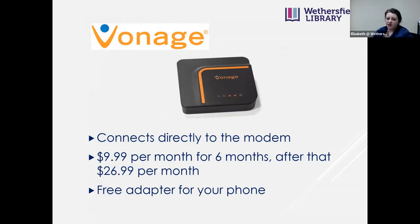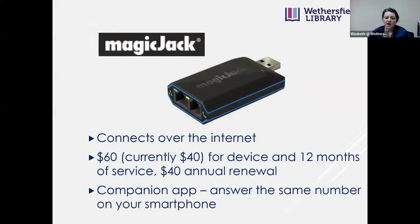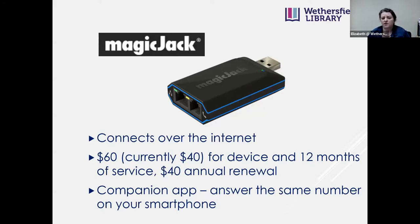Vonage connects directly to the modem rather than over Wi-Fi, with a free adapter included. It's $9.99 for the first six months, then $26.99 per month. MagicJack — seen in infomercials — is similar: $40 for the device with 12 months of service, then $40 annual renewal. It can connect to a laptop, a computer with internet, or directly to a modem. It also has a companion app so you can answer the same number on your smartphone.